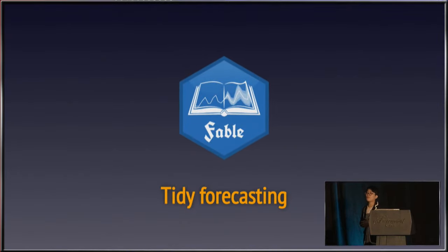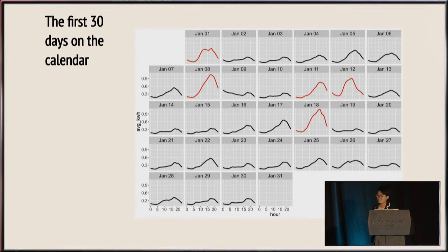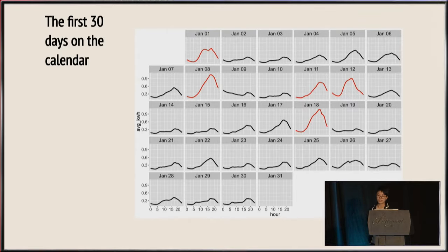How many of you have used the forecast package before? Quite a lot. The Fable is a tidy replacement of the forecast package. Why do we call it Fable? First, it makes forecasting tables. Second, a fable is like a forecast — it's never true but it tells you something useful. Let's look at the data in the first 30 days of January. Each facet gives a daily snapshot of hourly electricity demand, and the peak in the late afternoon is driven by air conditioning. January is summertime in Australia, and some days have much higher usage (colored red) because they are very hot days with maximum temperature greater than 32 degrees.